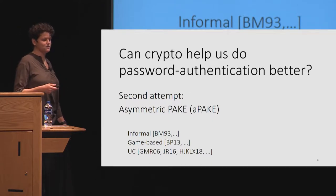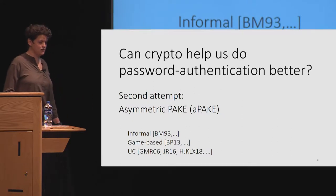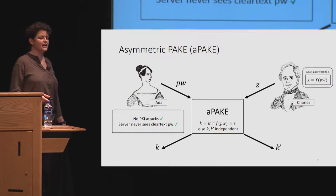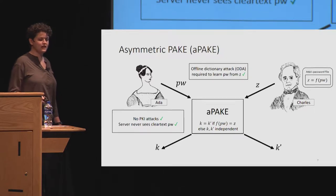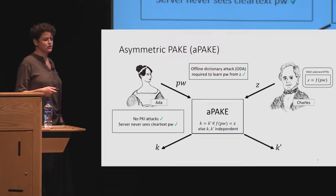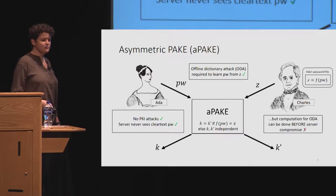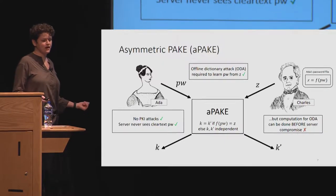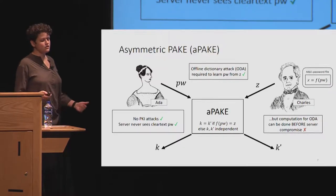To do better, we have something called asymmetric PAKE, which has also been studied in game-based and UC models. This is a simple extension of PAKE in which instead of storing just a password, Charles the server stores a hash of that password — you can think of F as a one-way function. We get the same pros as normal PAKE, plus the added benefit that if the server is compromised, the adversary has to do an offline dictionary attack to learn the password. But because F is a public fixed function, any computation for that offline dictionary attack can occur before the actual server compromise, so an adversary can pre-compute and immediately determine many passwords once they access the server.